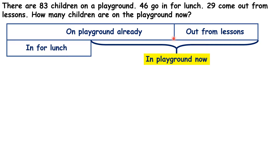Notice how I've drawn our bar model. On the top line, we have the total number of children who were in the playground, either because they were already out there, or because they came out from lessons. Then on the bottom line, we have what happened to those children — they either went in for lunch, or they are still in the playground now.